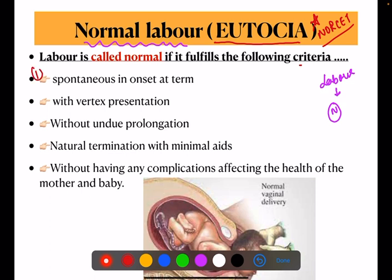The criteria for normal labor: First, it should be spontaneous in onset — no induction of labor should be done. Second, it should be at term, because if it is less than 37 weeks, we call it pre-term. So normal labor occurs at term.